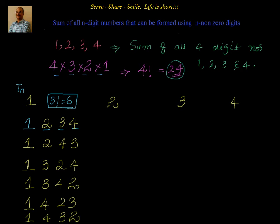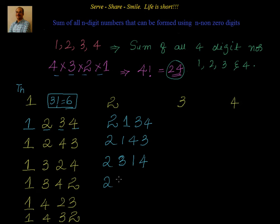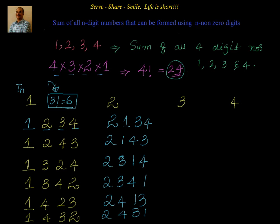Similarly, starting with 2 we can form 6 numbers: 2134, 2143, 2314, 2341, 2413, and 2431. Starting with 2 I can form 6 numbers, and starting with 1, 6 numbers. That 6 is nothing but factorial 3 — remember that, it will be useful to us.